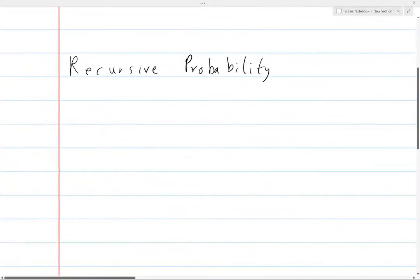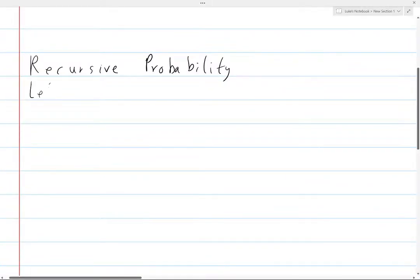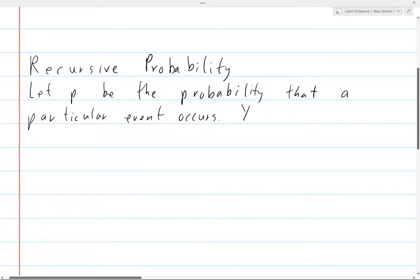So let me write this out. Let p be the probability that a particular event occurs. You may be given a problem where you can write an equation that looks like p equals f of p.